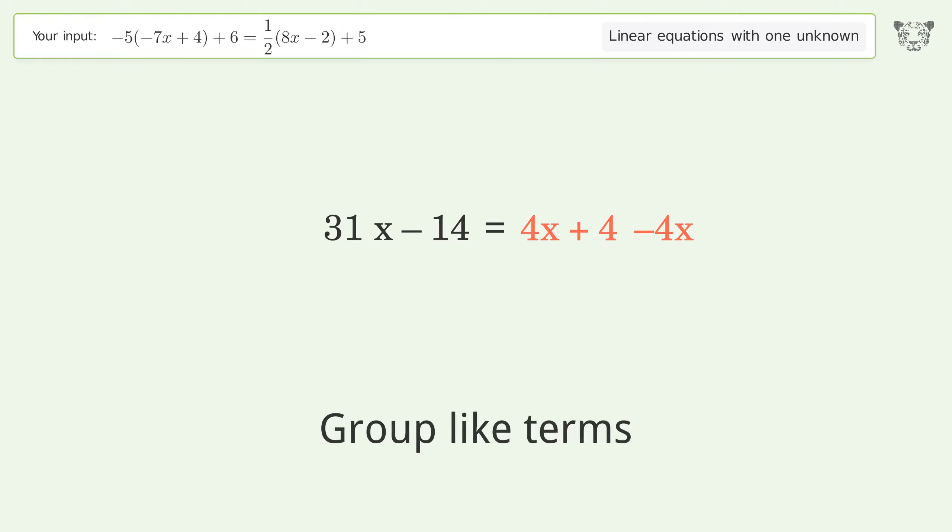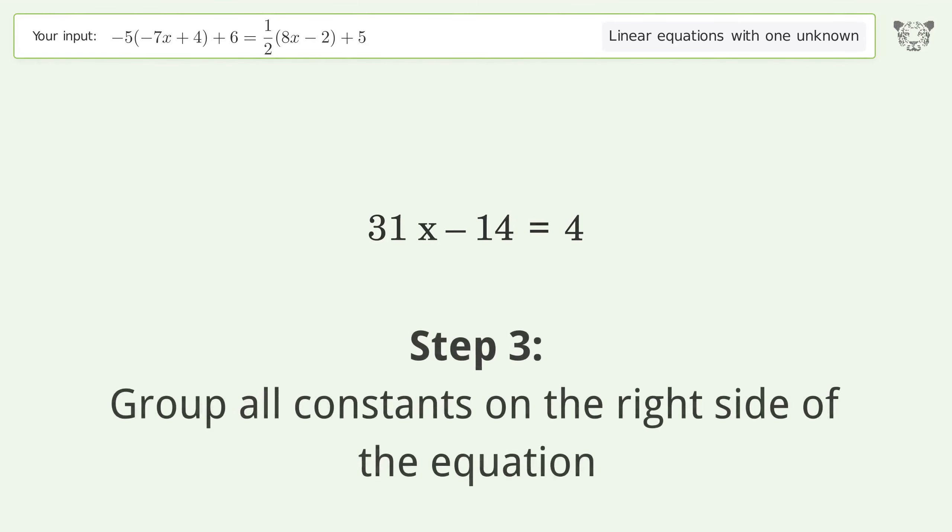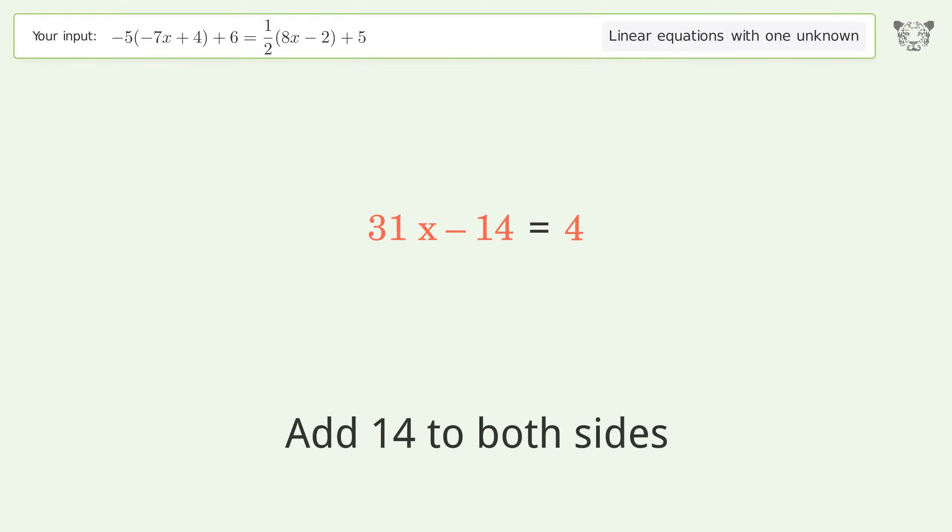Group like terms and simplify the arithmetic. Group all constants on the right side of the equation. Add 14 to both sides. Simplify the arithmetic.